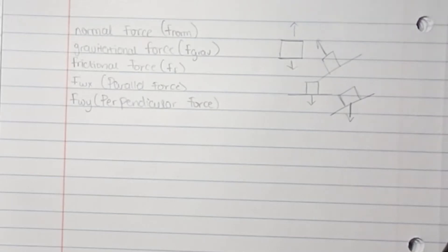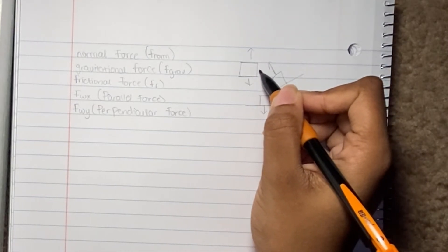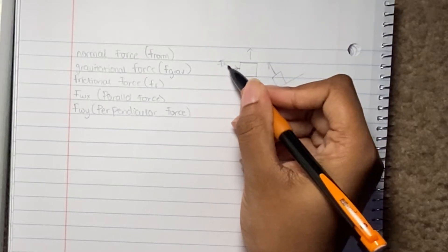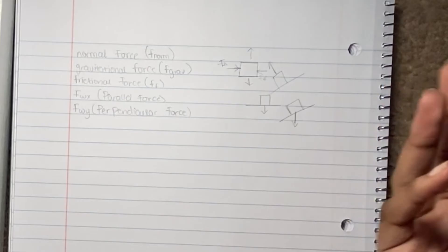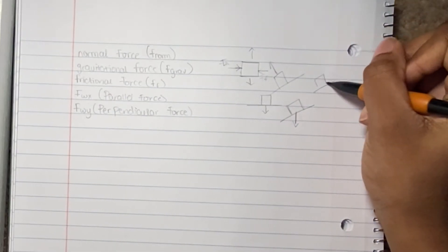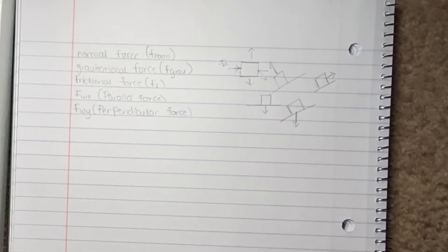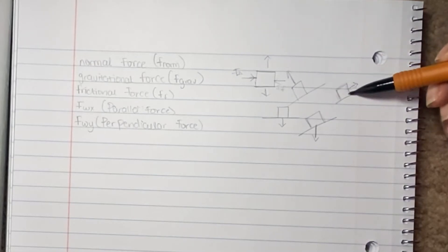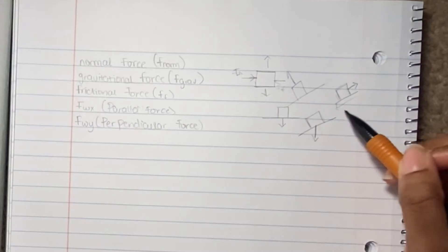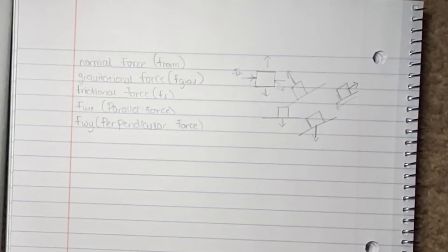Your frictional force is the force of friction — it tries to oppose the movement of the object. I believe the friction force goes opposite to the applied force. On an inclined surface where the object is sliding downwards, the friction force would be going upward along the surface, opposing the applied force. So friction basically goes in the opposite direction of your applied force.